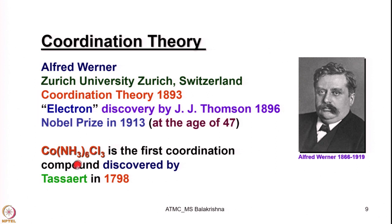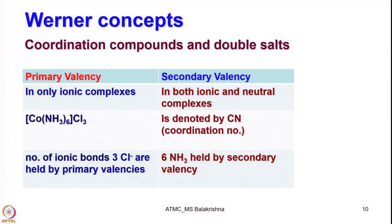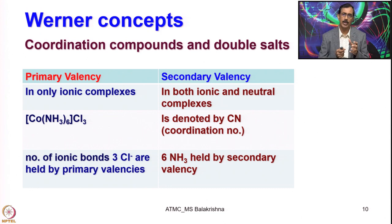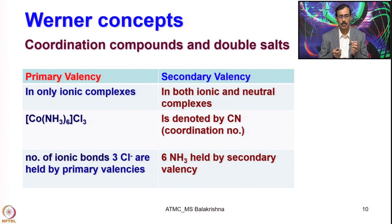Hexaminecobalt(III) chloride is the first coordination compound discovered by Tessart in 1798. Werner clearly distinguished between coordination compounds and double salts: coordination compounds retain their identity when put into aqueous solution, whereas double salts lose their identity and disintegrate into the corresponding ions. This was the first attempt he made in establishing coordination theory.